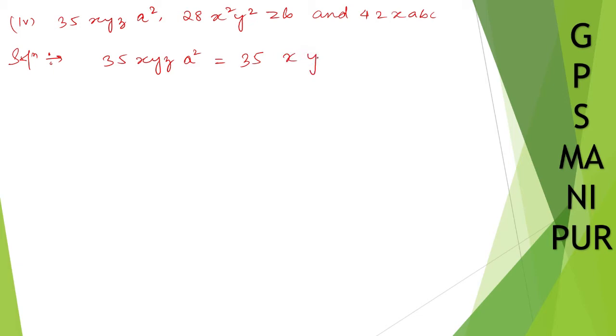So x y z a into a. Okay, a. And next is 28 x² y² z b. This one also, 28 x x y y z b.